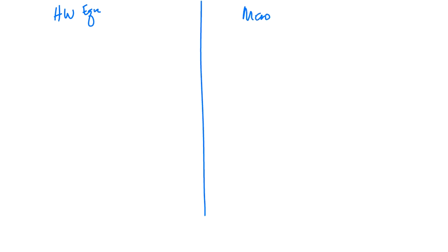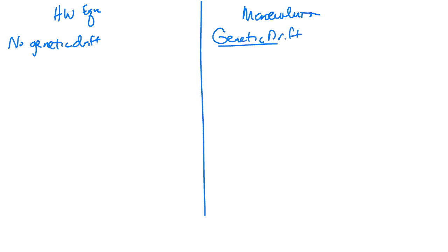We covered mutation, random mating, and natural selection. Now let's talk about genetic drift. On the Hardy-Weinberg side there is no genetic drift; if there is any genetic drift it leads to microevolution. The key word for genetic drift is chance. Natural selection is not chance — it's environmental pressure allowing an organism to survive better. Genetic drift has nothing to do with that; it is purely by chance.